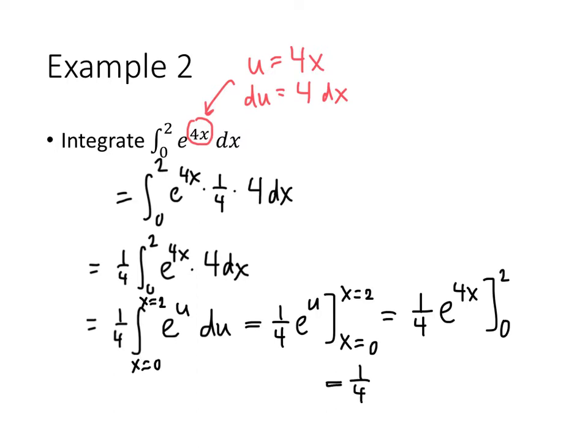So I get 1 4th e to the 4 times 2, minus 1 4th times e to the 4 times 0. That gives me 1 4th e to the 8th. And e to the 0 is 1, so minus 1 4th. And there's my final answer.